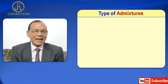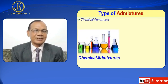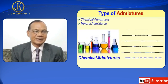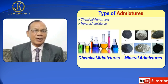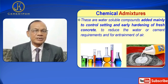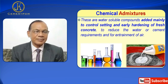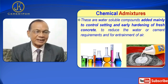Now, types of admixtures. There are two types: chemical admixtures and mineral admixtures. Chemical admixtures are water-soluble compounds added mainly to control setting and early hardening of concrete, to reduce the water-cement requirements, and for entrainment of air. They are added to concrete in very small amounts.